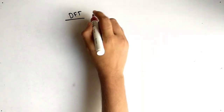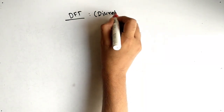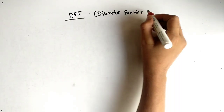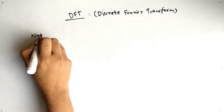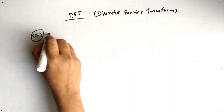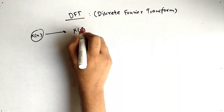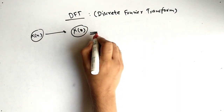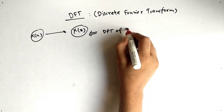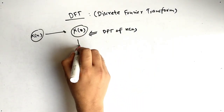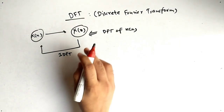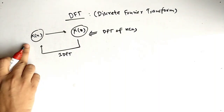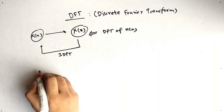Today our topic is DFT, which stands for Discrete Fourier Transform. In DFT, we are given x[n] and we have to find capital X[k]. If the condition is reverse, that is called Inverse Discrete Fourier Transform, where we have capital X[k] and we have to find small x[n].